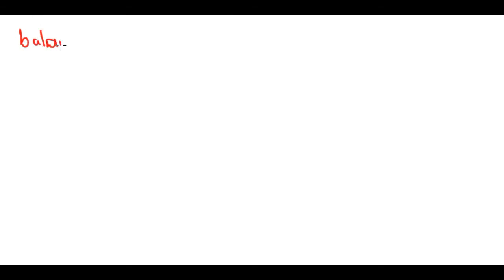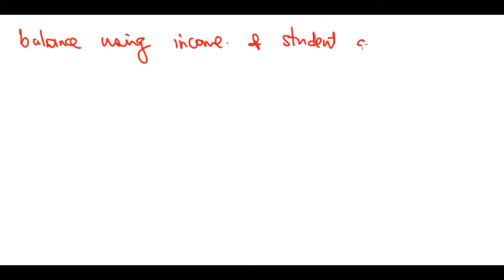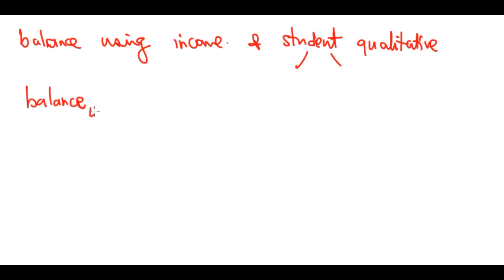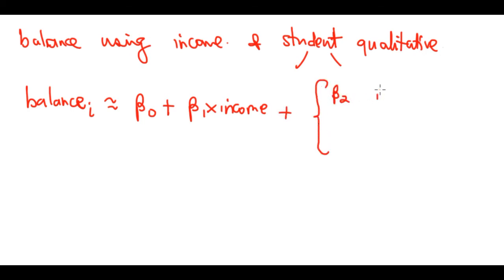Interaction terms don't only apply to quantitative variables — they also apply to qualitative variables. Consider the credit dataset: we wish to predict balance using income, which is quantitative, and student status, which is qualitative. In the absence of an interaction term, we use a dummy variable for student status, giving: balance = β₀ + β₁·income + β₂·(1 if student, 0 if not student).